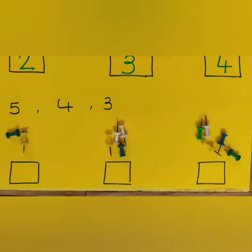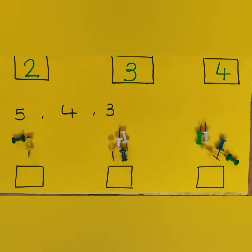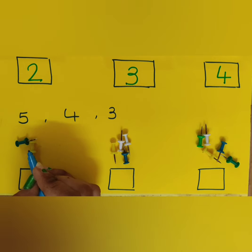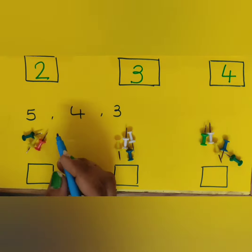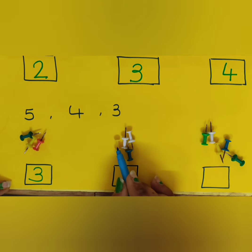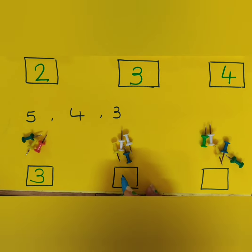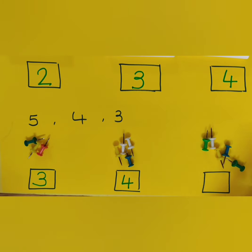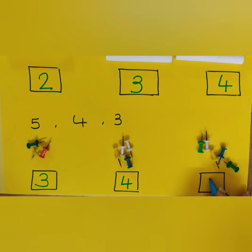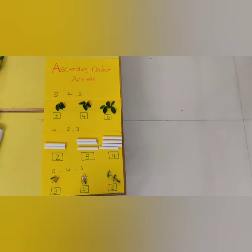What are these? These are pins. तो यहाँ पे कौनसा नम्बर लिखेंगे? 5, 4, 3. तो पहले हम pins count करेंगे — 1, 2, 3. तो यहाँ पे 3 pins हैं, तो पहले 3 लिखेंगे. 1, 2, 3, 4. तो यहाँ पे 4 pins हैं, तो 4 लिखेंगे. 1, 2, 3, 4, 5. तो last box में 5 लिखेंगे. तो यह थी हमारी ascending order activity.